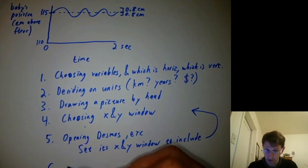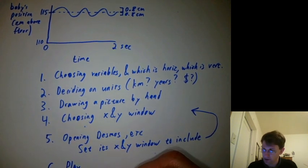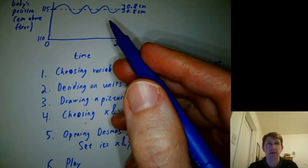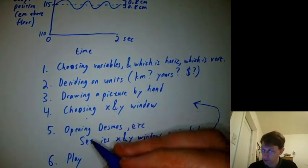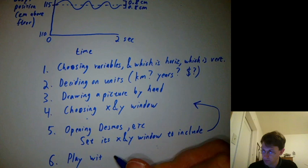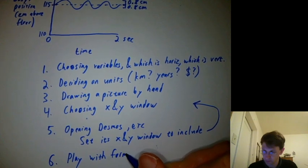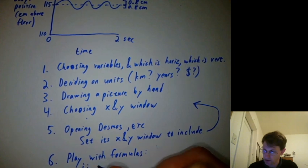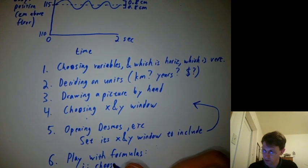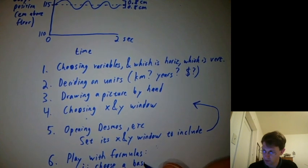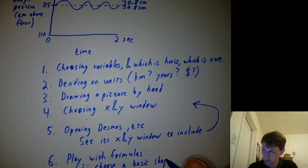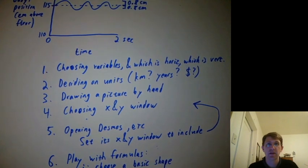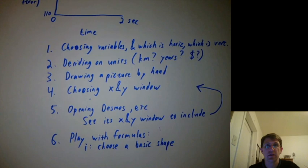And then step six, we actually play with formulas to try to get a formula that matches the graph we drew. So step one there would be choose a basic shape. Do you want a linear function, quadratic, exponential, that kind of stuff?